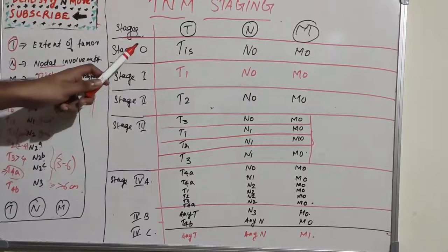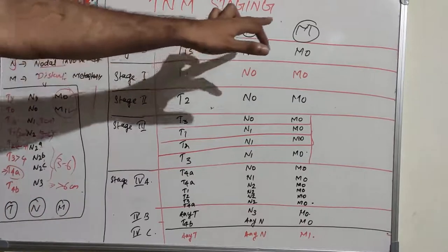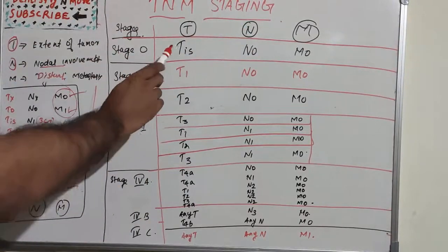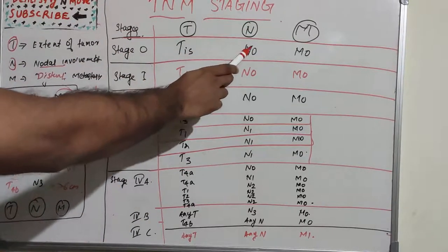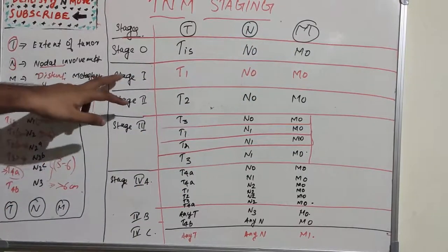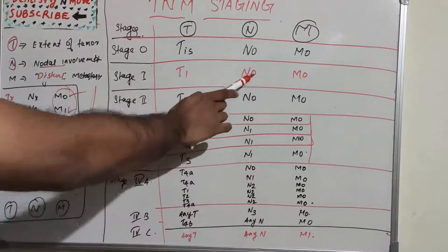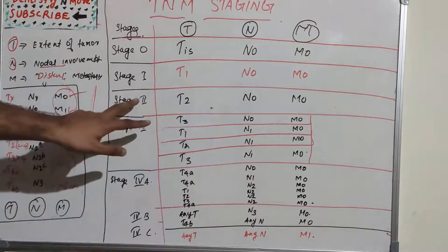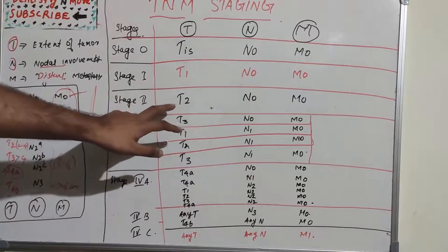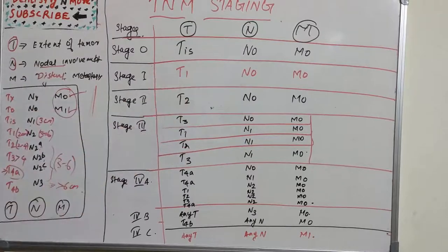TNM staging has four stages: 0, 1, 2, 3, and 4 based on T, N, and M involvement. Stage 0 is tumor in situ where nodal involvement or metastasis is absent. Stage 1 is T1 (less than 2 centimeters), N0, M0. Stage 2 is T2 (2 to 4 centimeters), N0, M0.